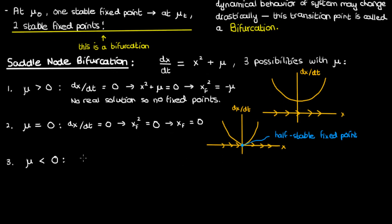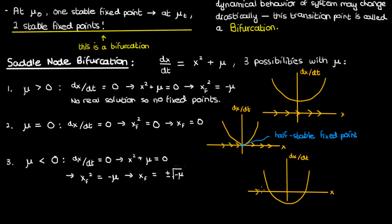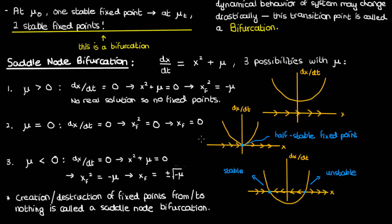If μ is negative, solving for the fixed points gives two solutions, and evaluating their stability reveals one is stable and the other is unstable. So going from positive μ to negative μ causes the creation of two fixed points from nothing, and going in the opposite direction gives the destruction of two fixed points into nothing. This type of transition — creation or destruction of fixed points depending on direction — is called a saddle-node bifurcation.